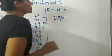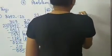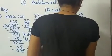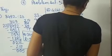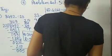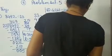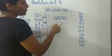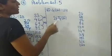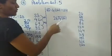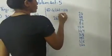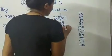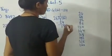Divide by 24. So student, here you have to write the table of 24. In the table of 24, is 42 there? No. So which one is smaller than 42? 24. So 1 times 24 is 24. Subtract: 12 minus 4 is 8, and 3 minus 2 is 1.